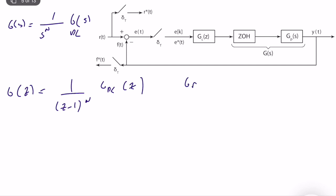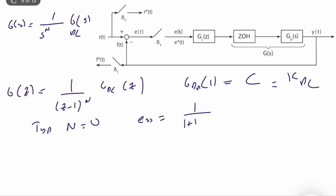For unit step response: if type n = 0, the steady-state error = 1/(1 + K_dc); when n > 0, the steady-state error = 0. Unit step input is the most important test input for a control system, digital or not.